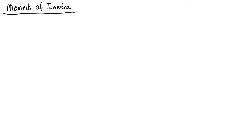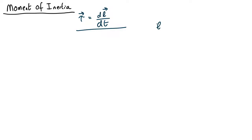We've seen that if we want to calculate how something starts or stops rotating, we use the fact that the torque is equal to the rate of change of the angular momentum. Now for a single mass moving in a circle, the angular momentum, or the magnitude of it, is just equal to mvr.